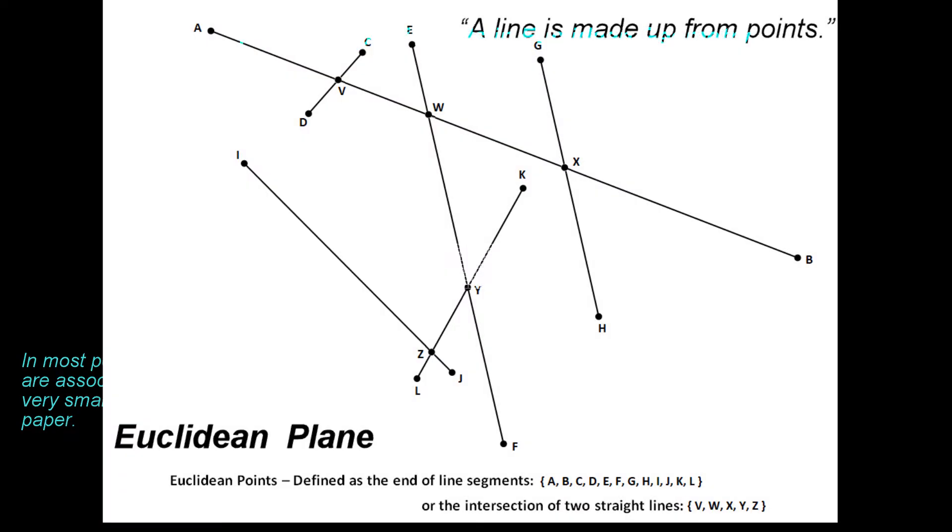Points are also sometimes defined as the end-of-line segments, or the intersection of two straight lines. Using some strange logic, one can infer then, that a line is made up from an infinite number of points. The logic goes like this. Let's imagine a line, and then let's intersect this line with any number of other lines, the intersection is always a point.